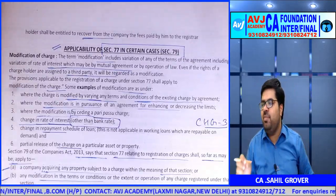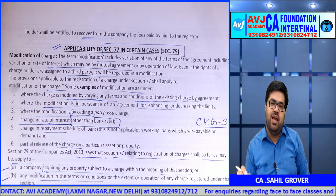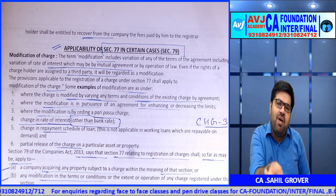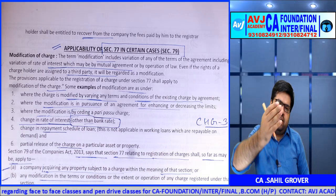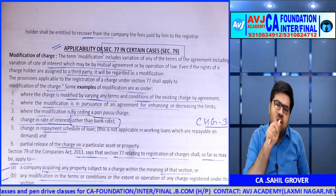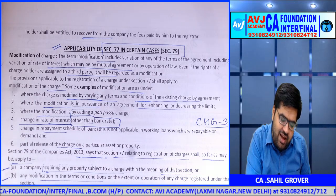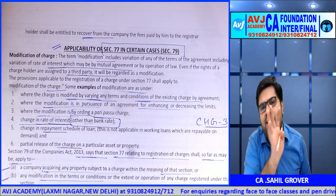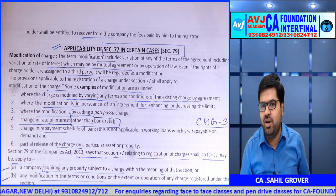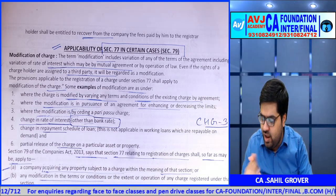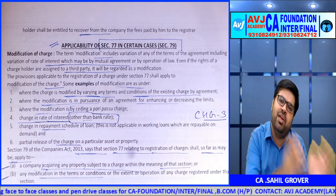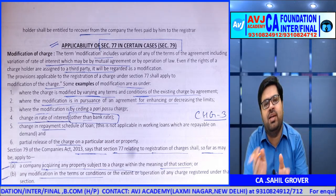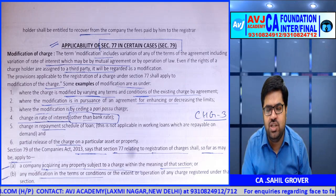Section 79: applicability of Section 77 in certain cases. Two cases are covered: acquisition of property by the company subject to charge — where the company buys an asset that already has a charge on it — and modification of charge. Section 79 says the provisions of Section 77 apply to these cases as well. So since Section 77 was amended, Section 79 automatically reflects those changes — no separate amendment was needed in Section 79. Both pre- and post-commencement time limits of Section 77 apply.